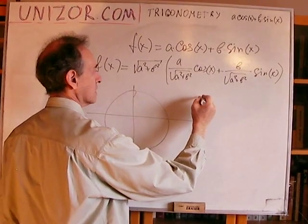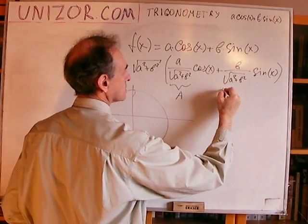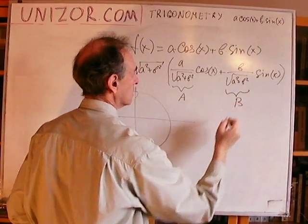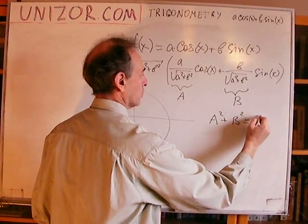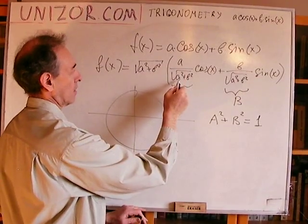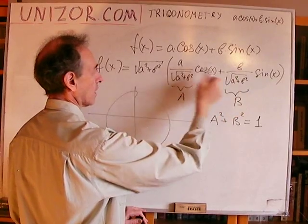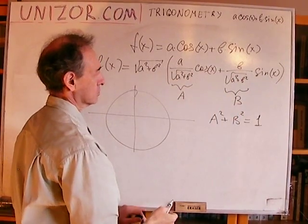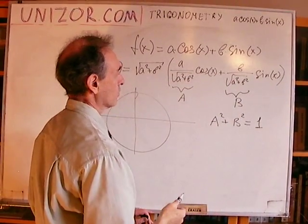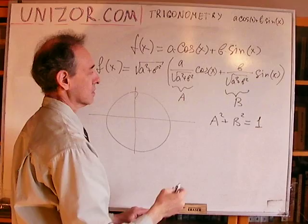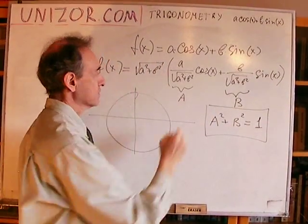Let's consider a unit circle. Now, since this I will call A, this I will call B, now it's obvious that A² + B² is equal to one, right? A squared would be a²/(a² + b²) plus b²/(a² + b²). You will add together the numerators and you will have exactly the same as the denominator, a² + b², and they're not equal to zero. So, this is an important property of these two numbers.